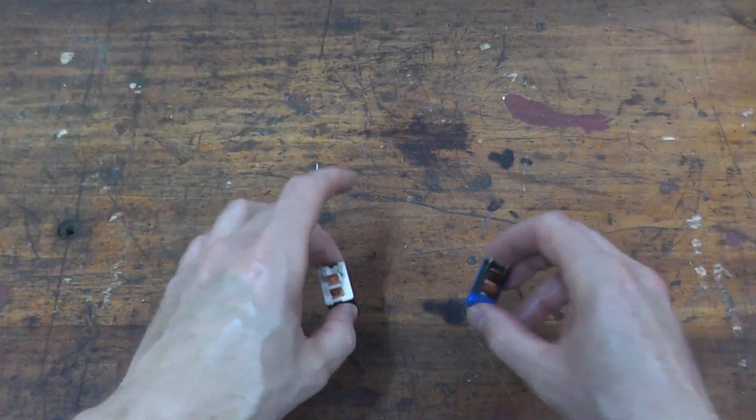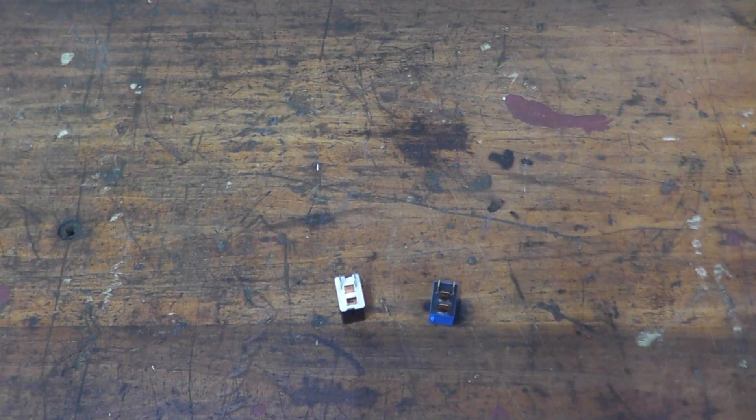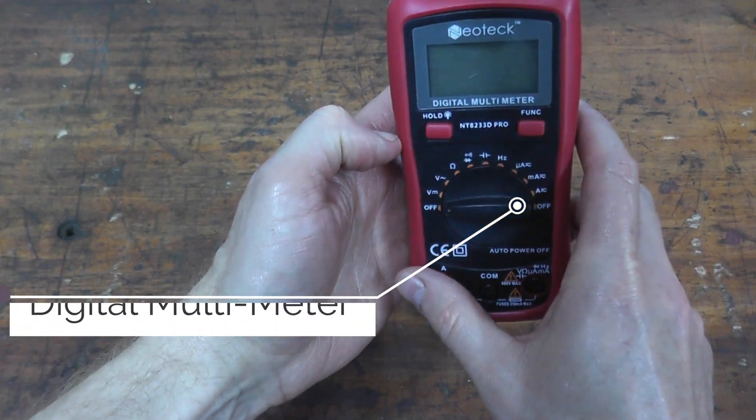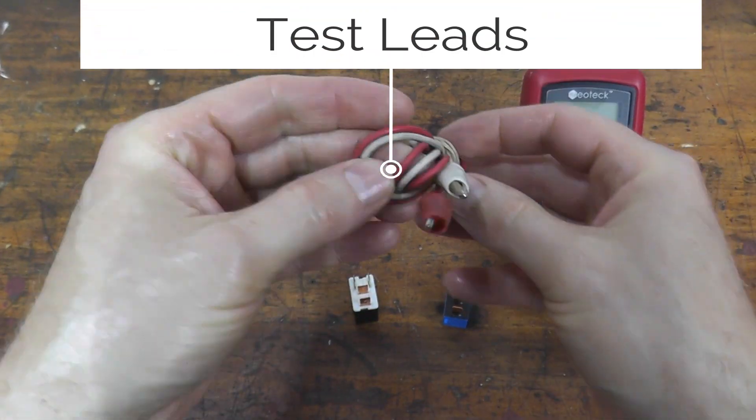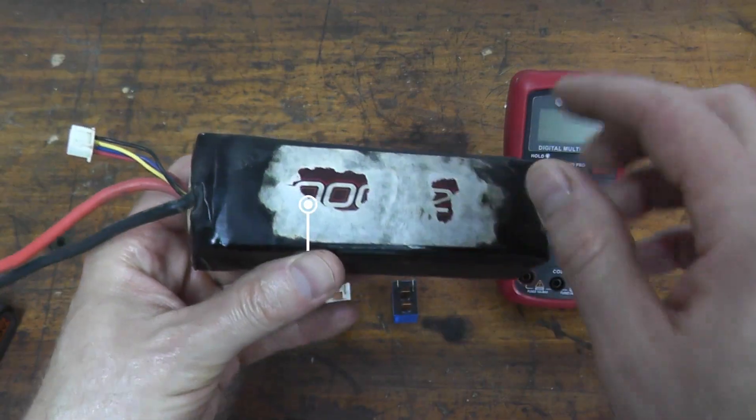Now I will list all of the tools in the description box below in case you need anything, but we really only need a few things. Number one is a digital multimeter. These are test leads which are essentially just wires with alligator clips on the ends of them.